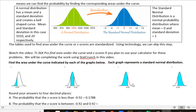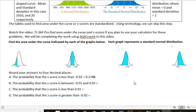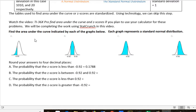So I want to show you an example of what you might be asked to do. This says find the area under the curve indicated by each of the graphs below. And each of these graphs represent a standard normal distribution. By saying that, I'm telling you that the mean is zero and the standard deviation is one. And so you're going to round your answer to four decimal places, but I want to talk about the first one.